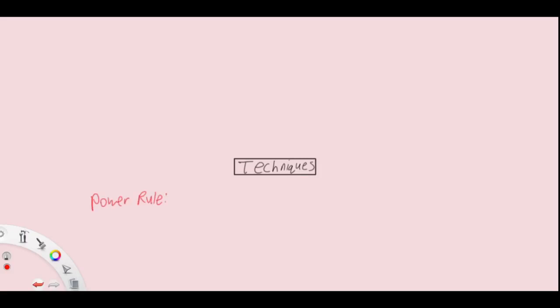We start with techniques, beginning with the power rule where we have y equals fx to the power of n. The derivative is simply bring out the power to the front, reduce the power by one, and then differentiate inside.